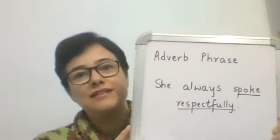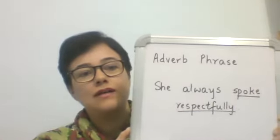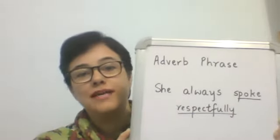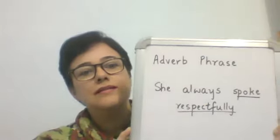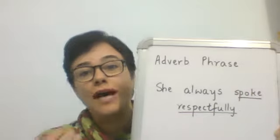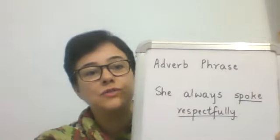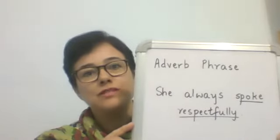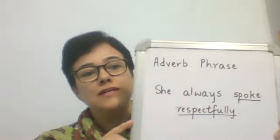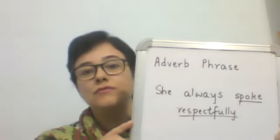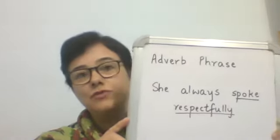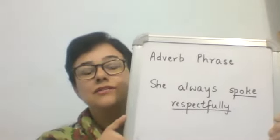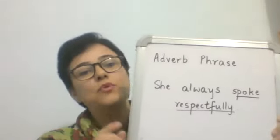The fourth type is an adverb phrase — called so because it contains an adverb. An adverb is a word that modifies or adds meaning to a verb. If a group of words functions as an adverb, then it is an adverb phrase. In the sentence 'She always spoke respectfully,' 'spoke' is the verb, and the adverb phrase is 'spoke respectfully.'